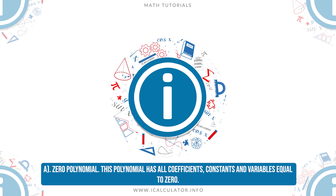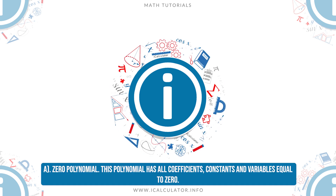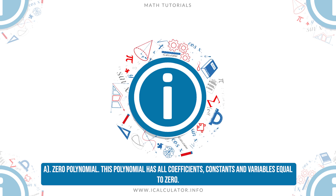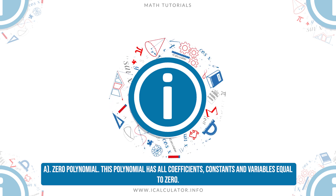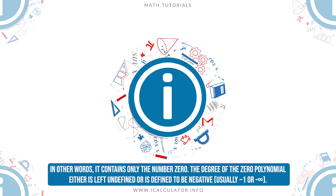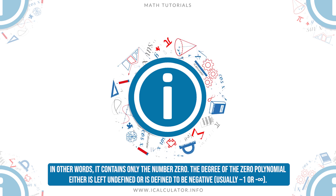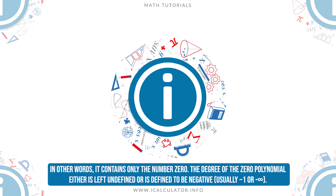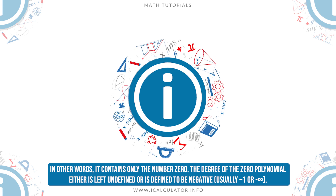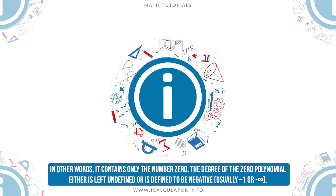A. Zero polynomial. This polynomial has all coefficients, constants, and variables equal to zero. In other words, it contains only the number zero. The degree of the zero polynomial either is left undefined or is defined to be negative, usually minus 1 or minus infinity.